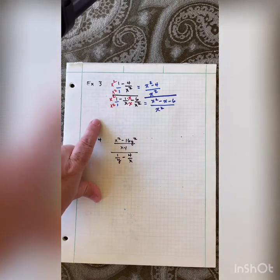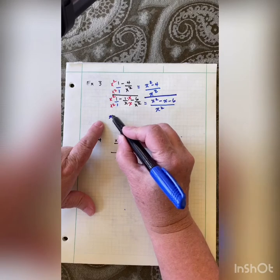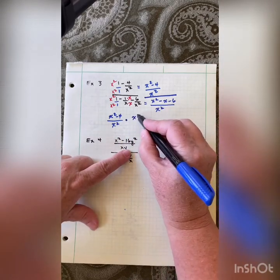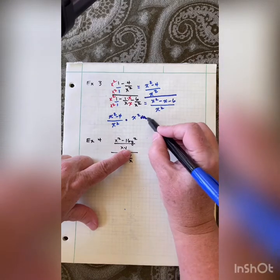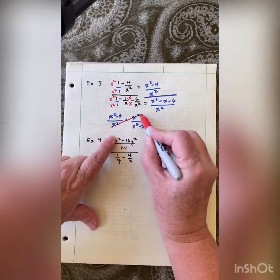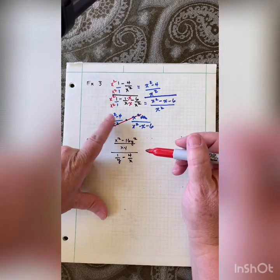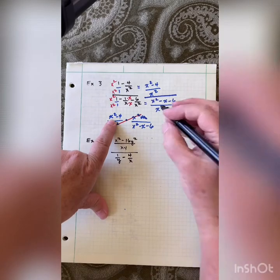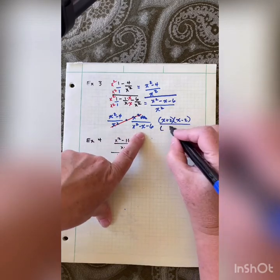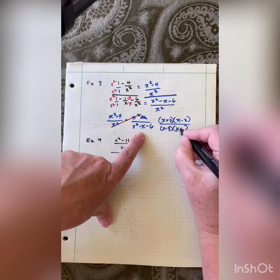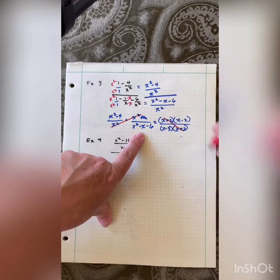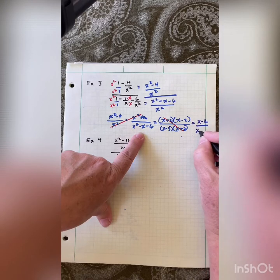Now setting this up: I have x squared minus four over x squared, times — flipping the denominator fraction — x squared over x squared minus x minus six. The x squareds cancel. I need to factor the remaining expressions: x squared minus four is a difference of squares, giving x plus two times x minus two. And x squared minus x minus six factors into x minus three times x plus two. Those x plus two terms cancel, and my answer is x minus two over x minus three.